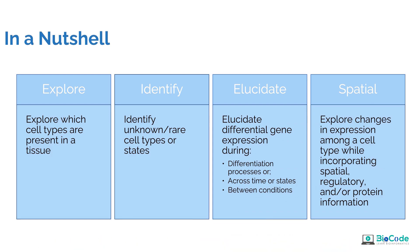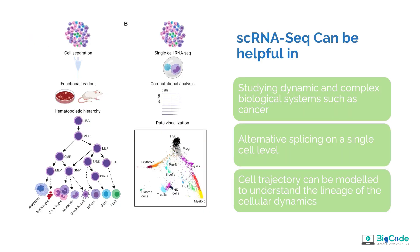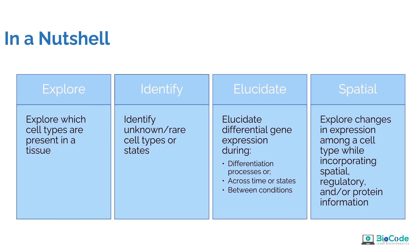We can explore, identify, elucidate, and do spatial analysis: explore which cell types are present in a tissue, identify unknown or known cell types including rare ones, elucidate differential gene expression analysis across differentiation processes, time states, and between conditions. For example, if you want to understand the differential gene expression between pro-B cells and B cells, you can do that after clustering. We can also do spatial understanding of single cell data, exploring changes in expression among cell types while incorporating spatial, regulatory, or protein information.